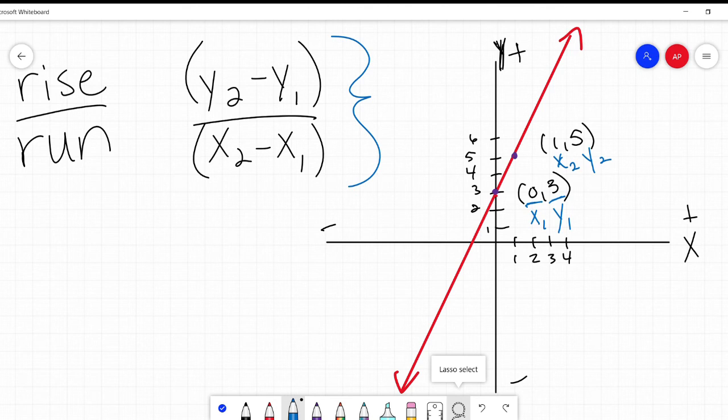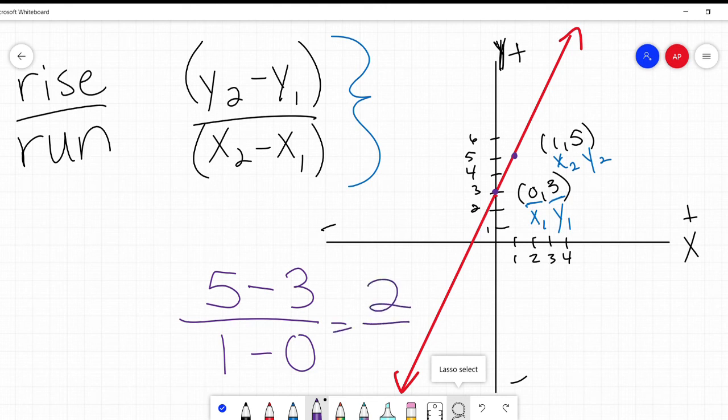So, let's plug those in to our equation. Y2, the Y from the second point is 5, minus Y1, the Y from the first point, over X2, the X from the second point, which is 1, minus X1, the X from the first point, 0. What's 5 minus 3? 2. What's 1 minus 0? 1. Lo and behold, we have a match. It is, again, 2 over 1 or 2. Same exact answer.